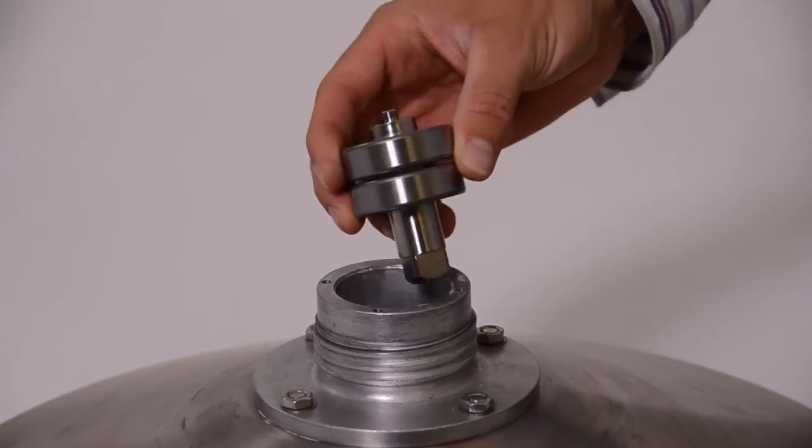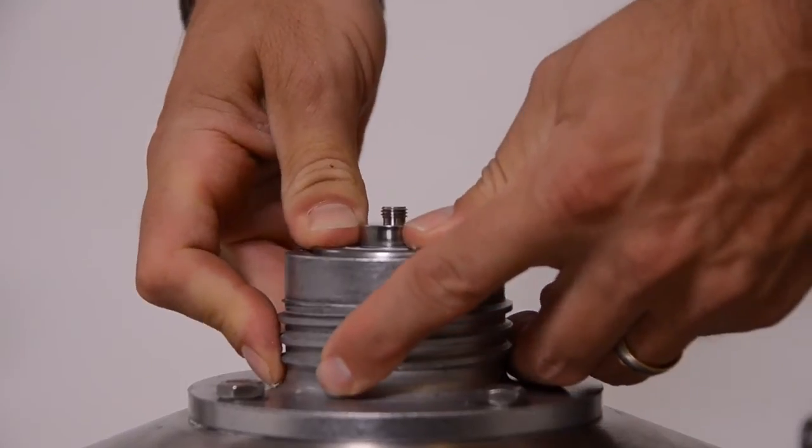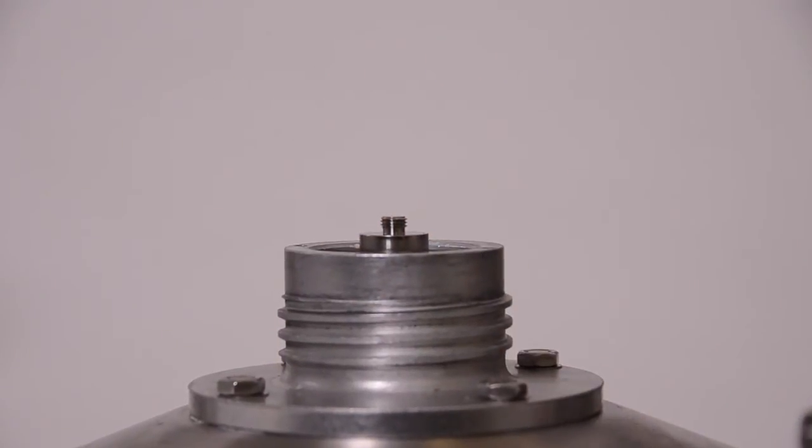After installing the washer over the seals, you will want to insert the shaft kit, which has been pre-lubricated with white food grade grease, into the bearing seat assembly.